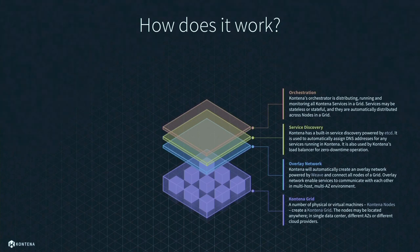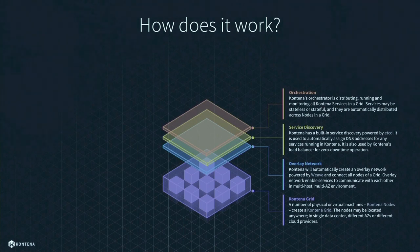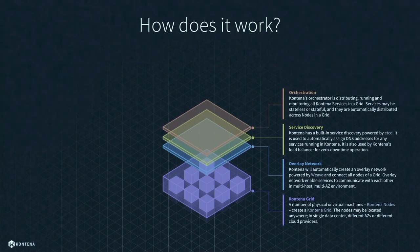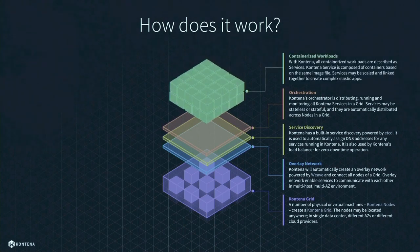When talking about a container platform, the platform has to offer orchestration capabilities — and that's the case with Contena. Contena comes with a powerful orchestration component that takes care of distributing, running, and monitoring all your services in the grid. The orchestration ensures the load is balanced within the grid and that containers which are supposed to be running are actually running somewhere in the grid. You can run stateless or stateful applications — so if you run stateful databases, Contena orchestration takes care that the data will be there even across deployments. On top of these architectural layers, you can then deploy your own containerized workload, your application.